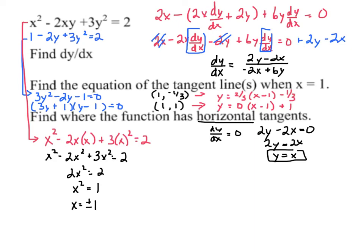Now, again, we'd already found one of these answers, the point (1, 1). But now we find another, because when x is negative 1, of course, y is negative 1. So both of these spots will have horizontal tangents on the original graph.